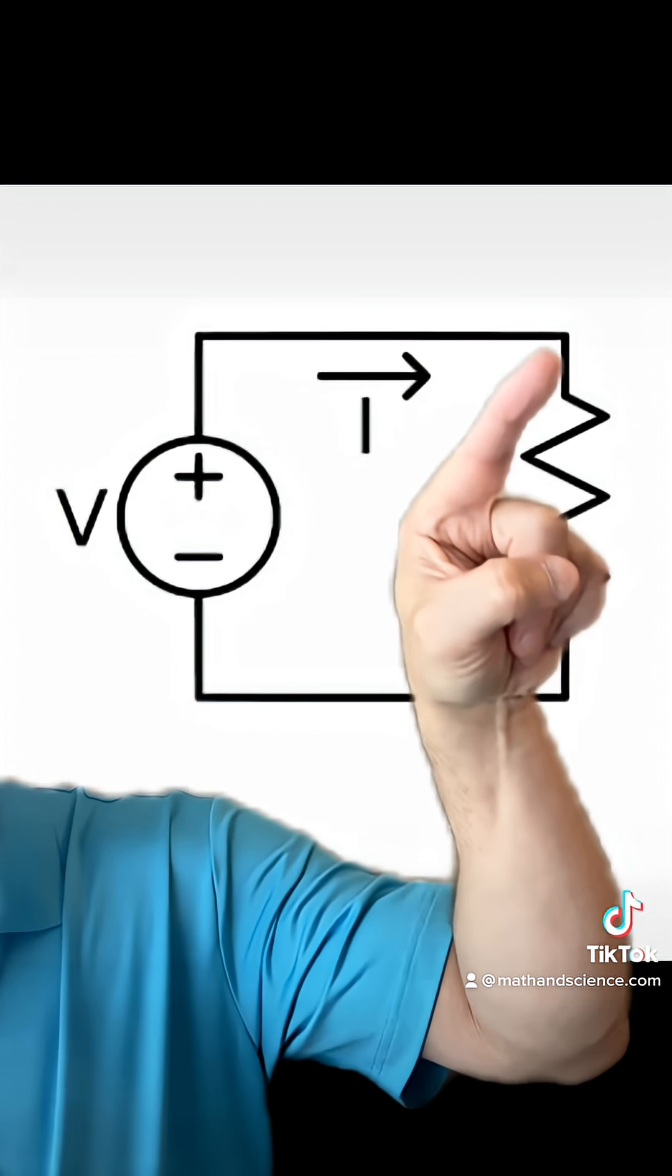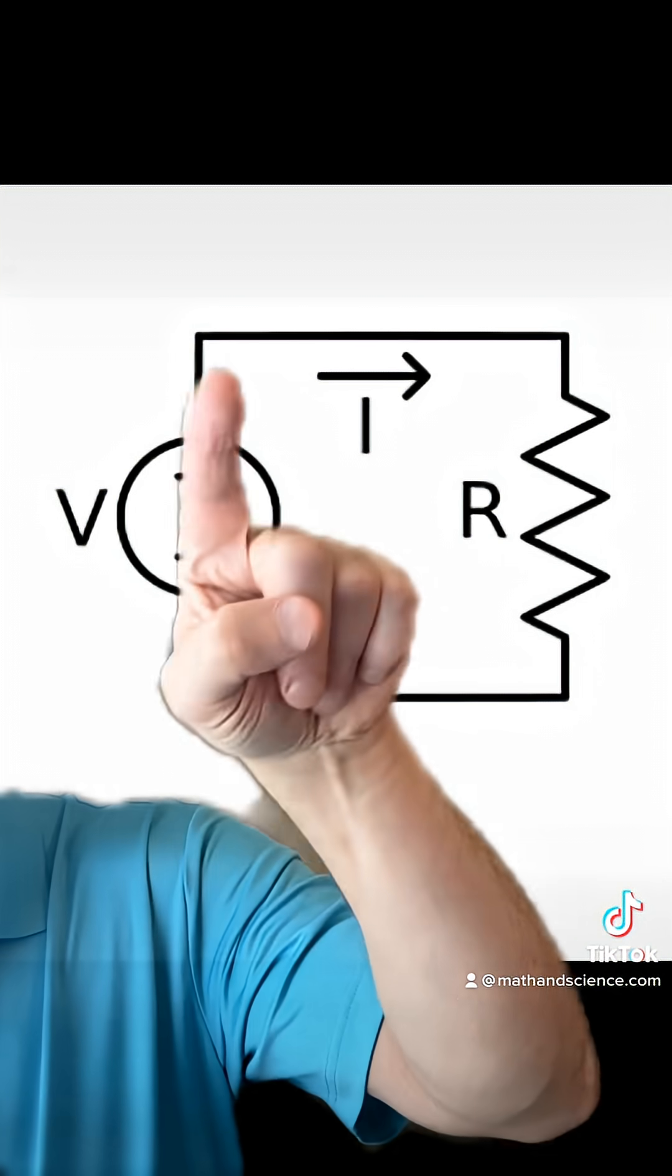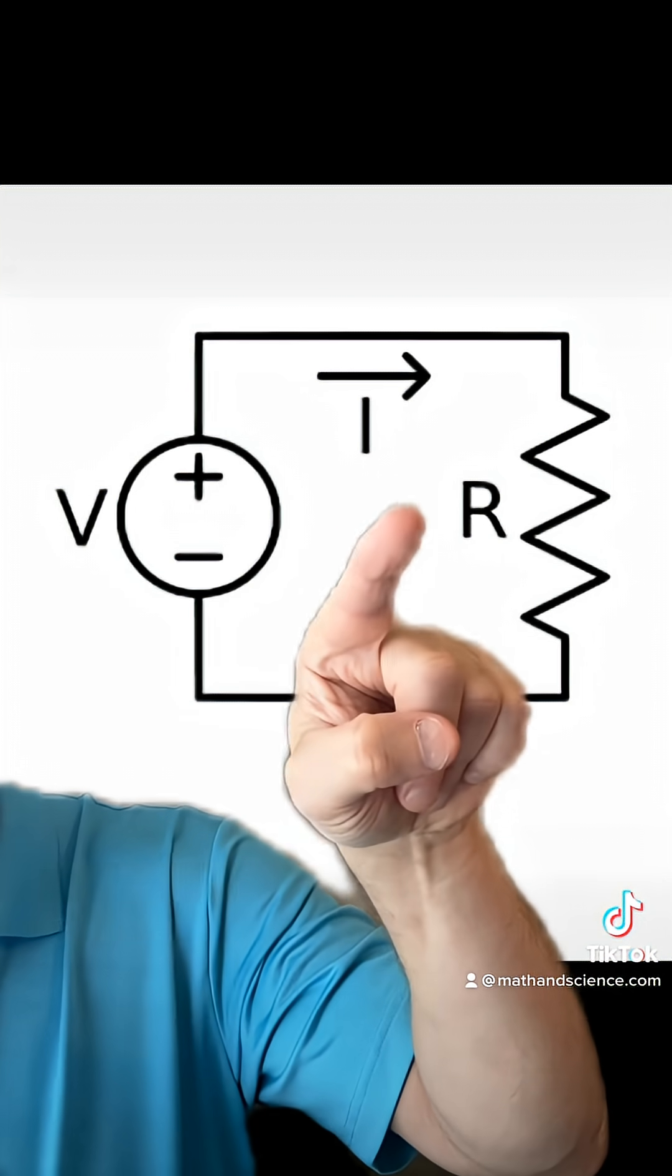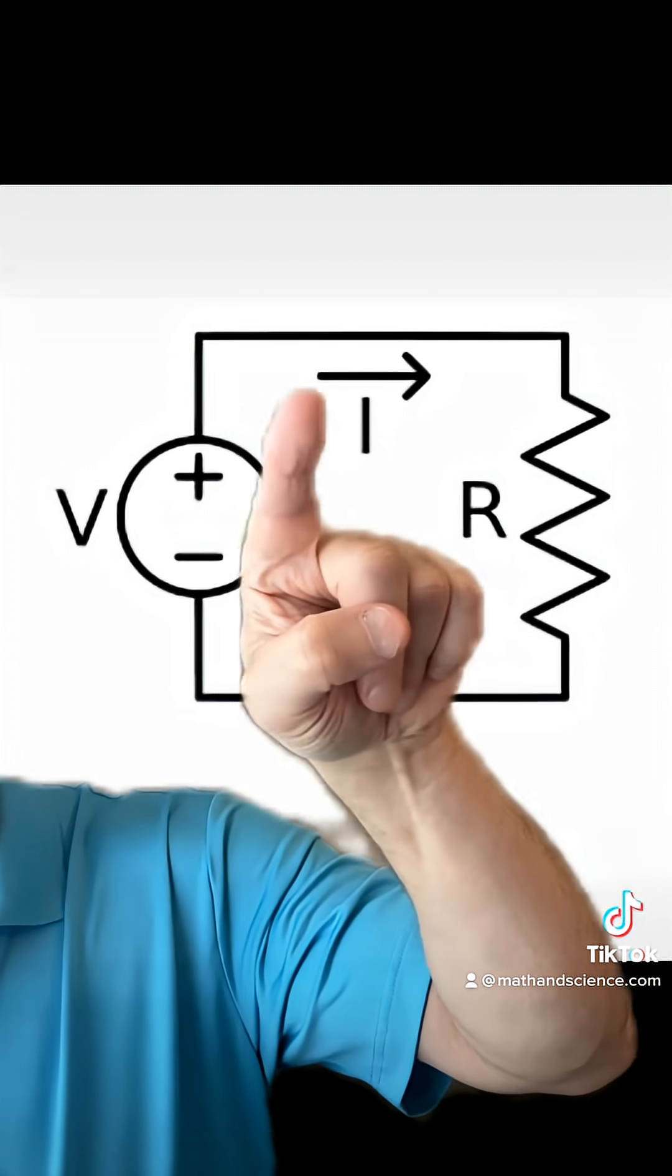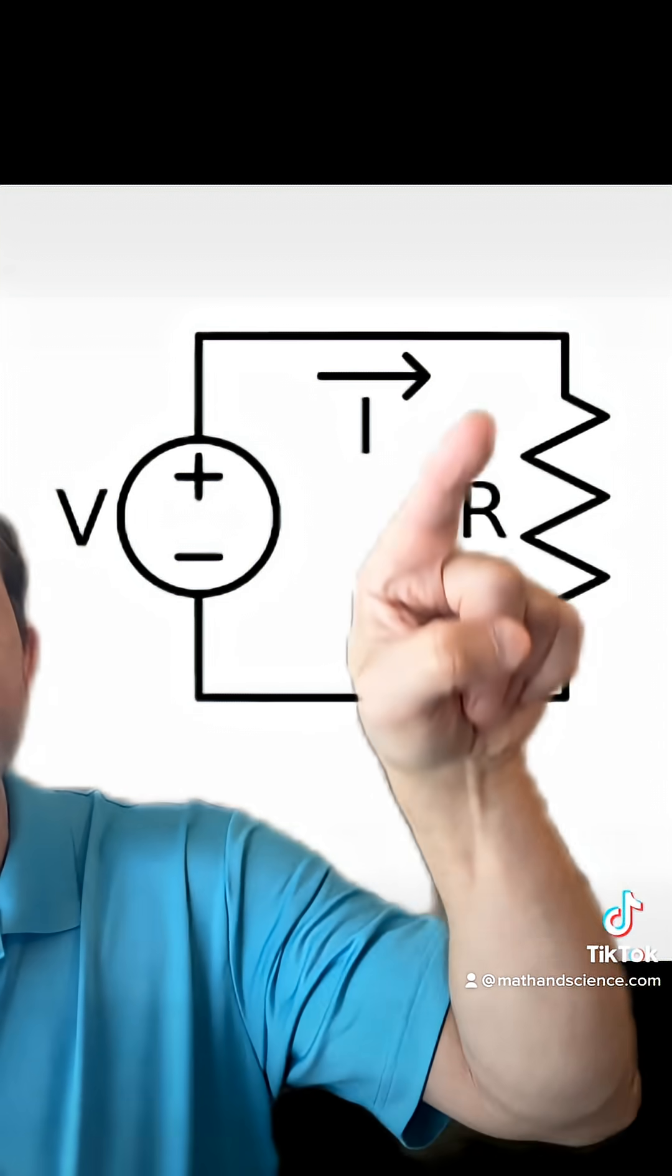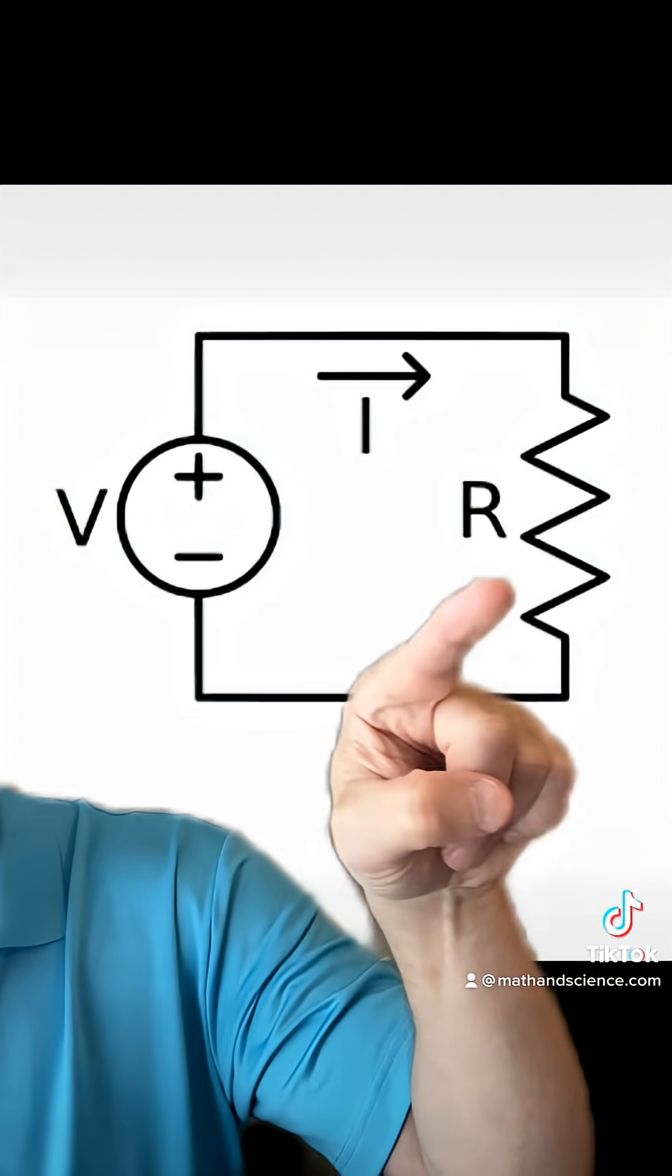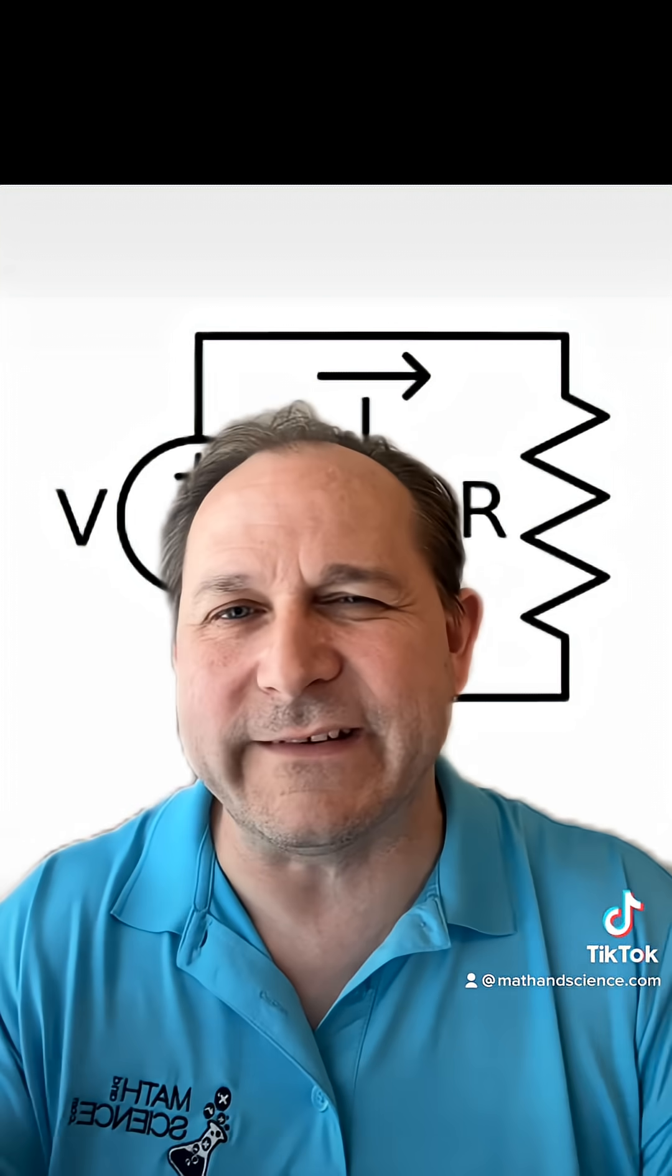And then through the wire going all the way around in the circuit is the current, which is called I. So you have the voltage, and you have the current, and the current is electrically flowing charges through the load, which in this case is a resistor, which you can think of for this example like a light bulb.